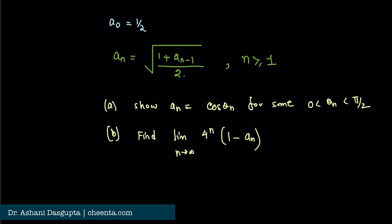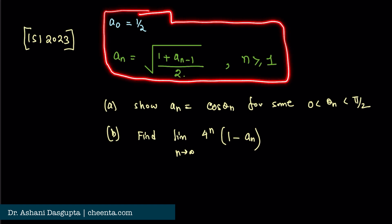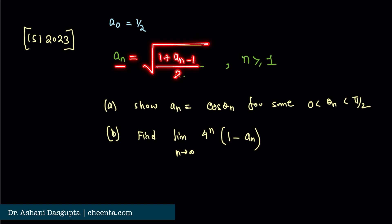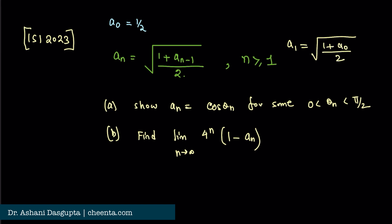In this problem from ISI Entrance 2023, we work with a very interesting sequence of numbers that is defined recursively. The first number of the sequence is a_0 = 1/2, and from the second number onward, a_n is defined as the square root of (1 + a_{n-1}) / 2. So if I wanted to calculate a_1, I would compute the square root of (1 + 1/2) / 2. This is how this infinite sequence is defined.